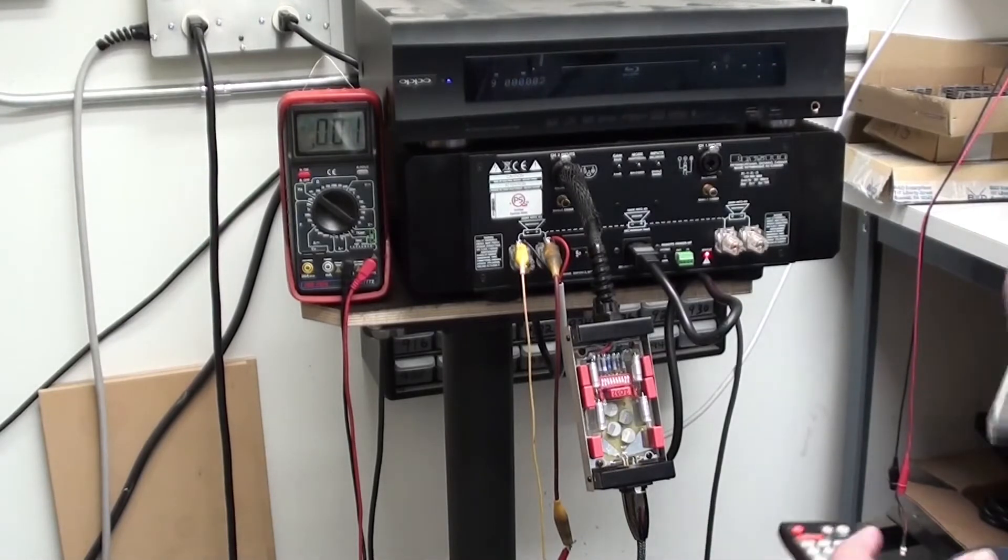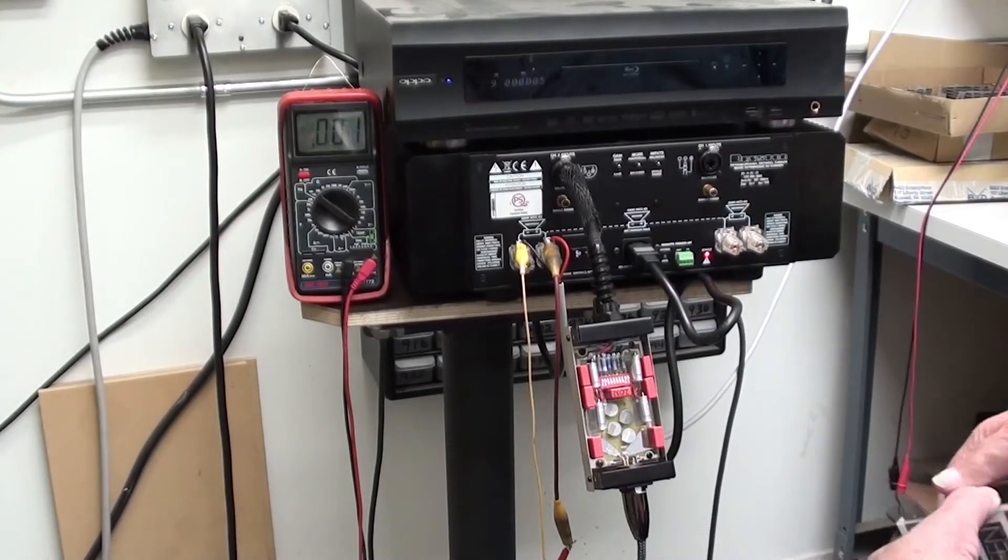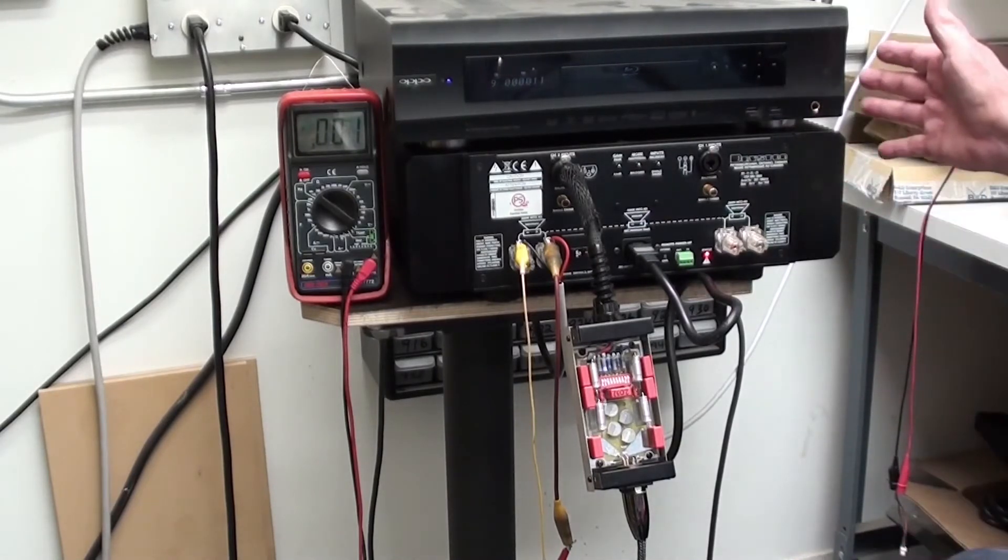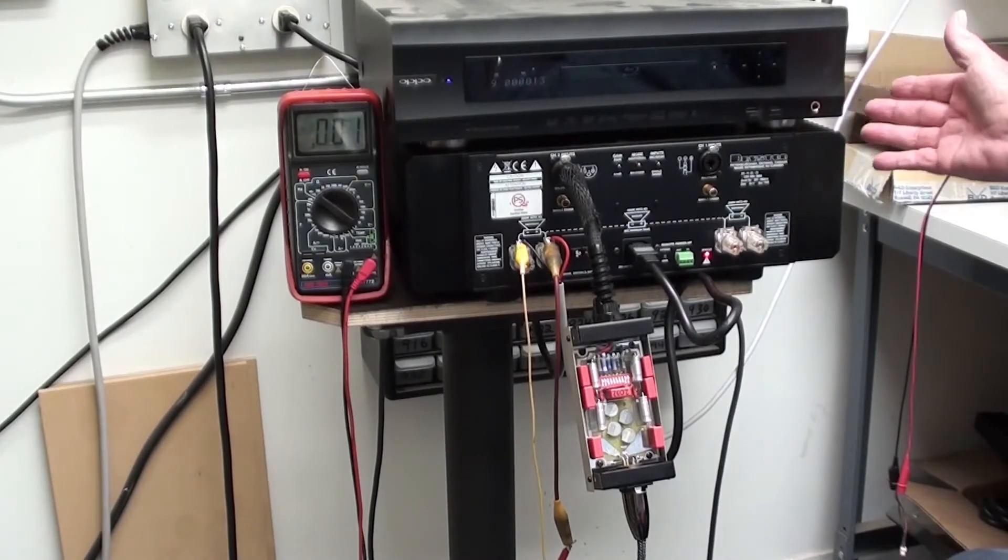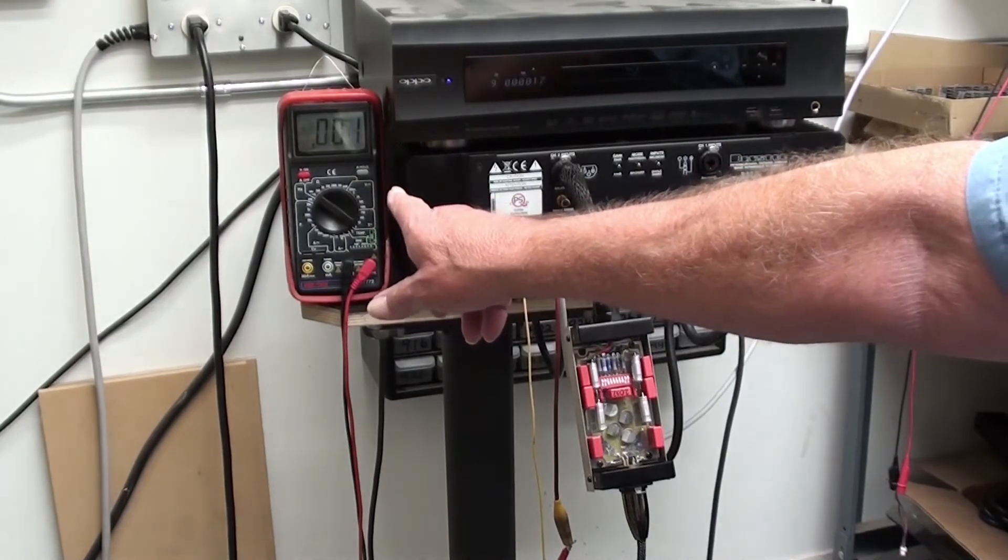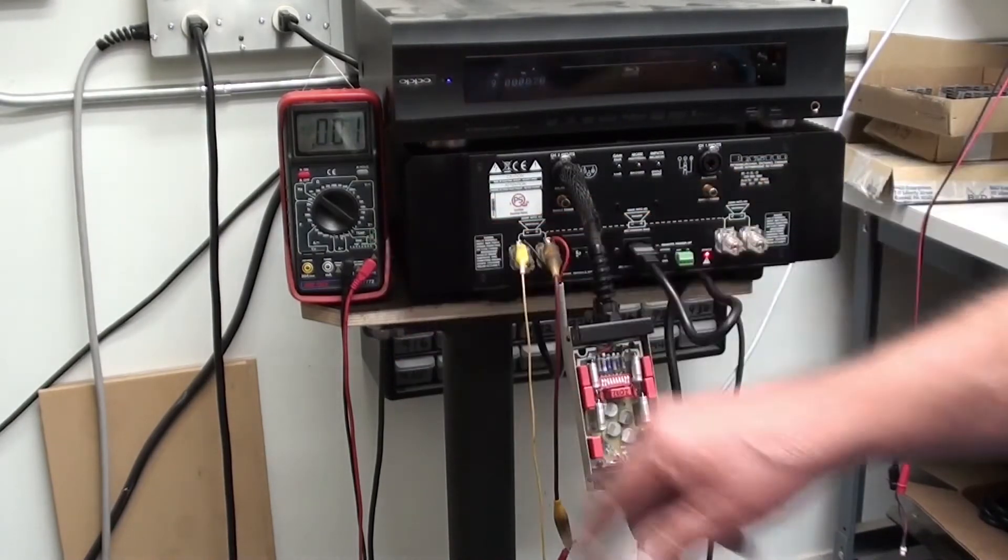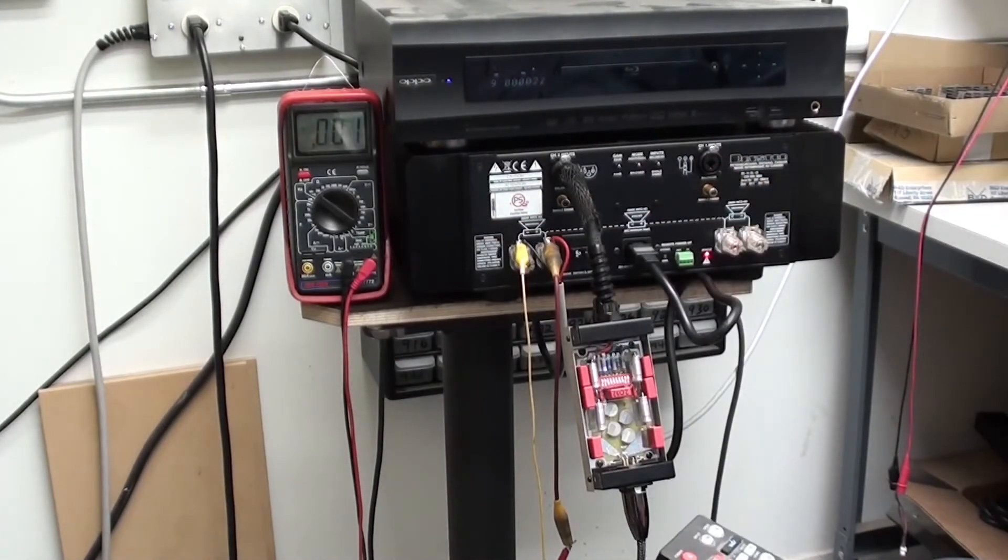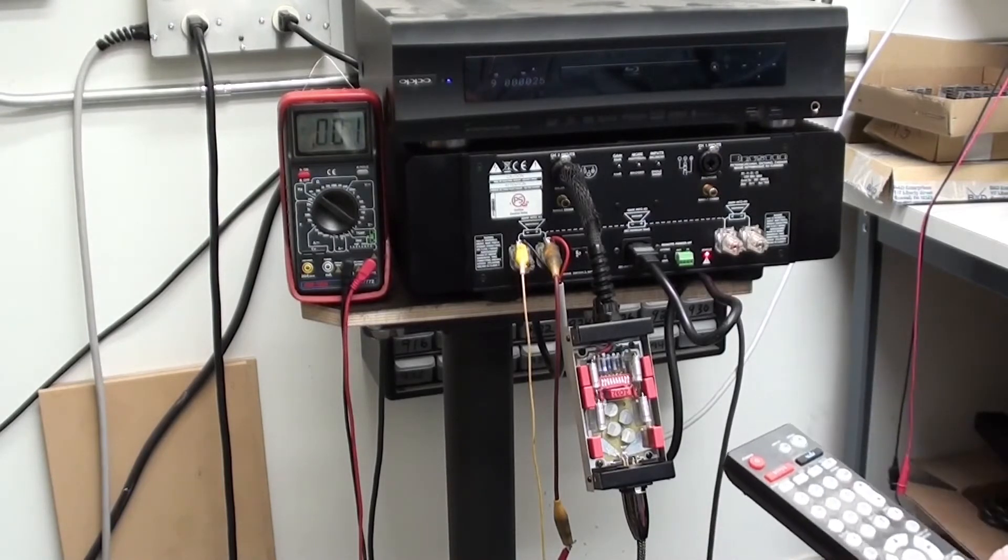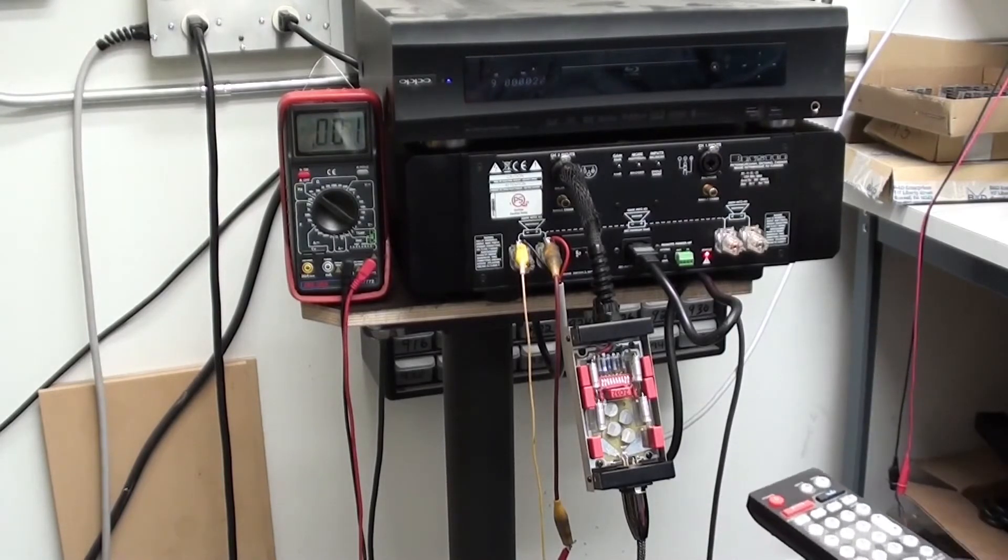Track 27 is 1000 Hz. So what we're going to do is adjust the level of the CD player in this case, but in your case, it might be the preamp to where we get an indication as close to 1 volt AC as we can. So let's play track 27. In this case, we're on.